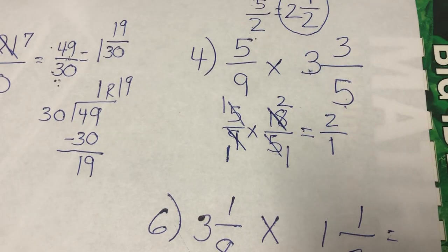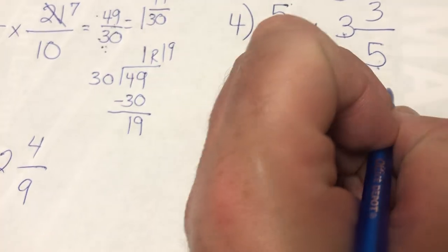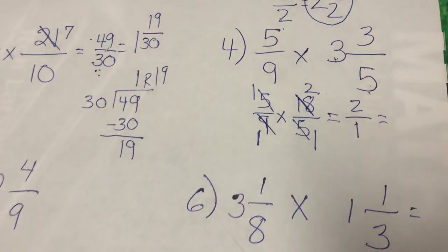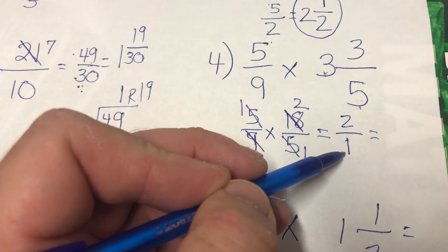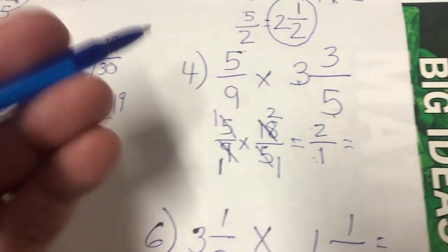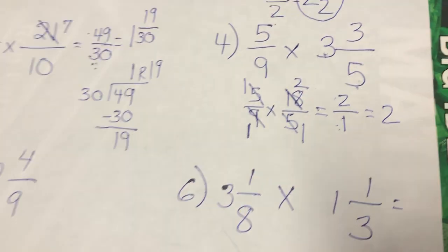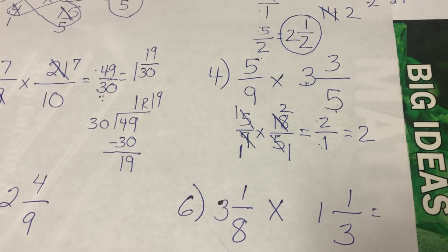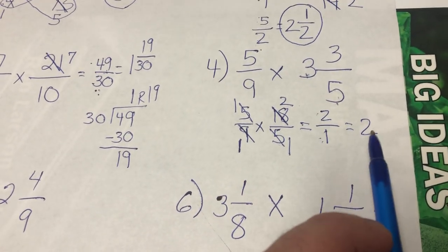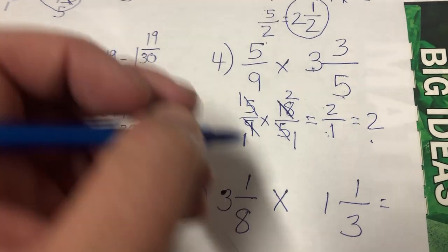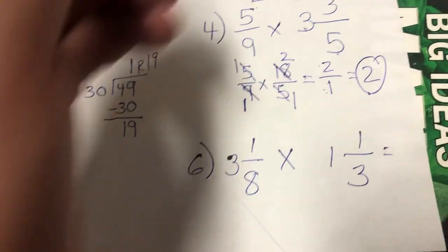Two over one is an improper fraction, but a fraction is a division problem — this is just two divided by one. Two divided by one is two. One can go into two exactly two times with none left over, so my final answer is two.